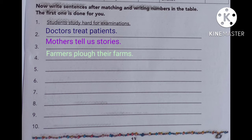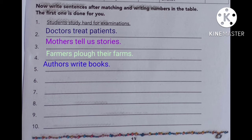Sentence four: Farmers plough their farms. Farmers is the noun — plural form — from column A. Plough is from column B. Their farms is from column C. Sentence five: Authors write books. Authors means writers. Authors is the noun, write is the verb, books are the other words from column C.